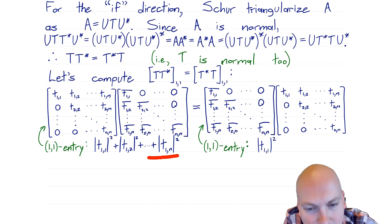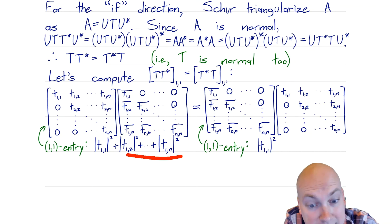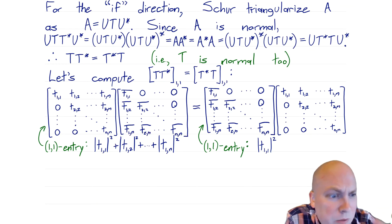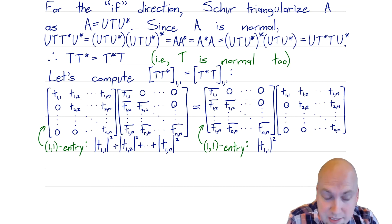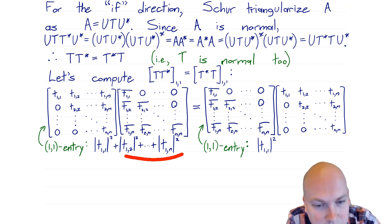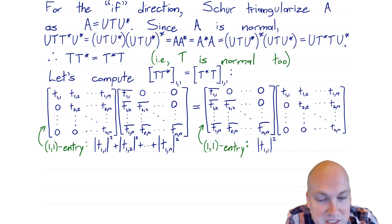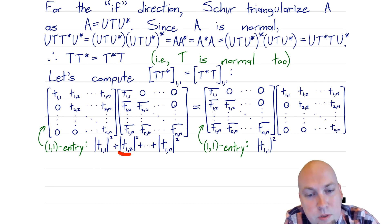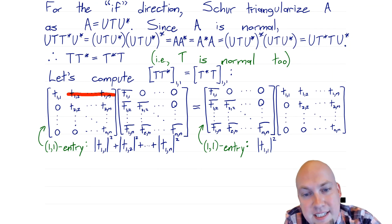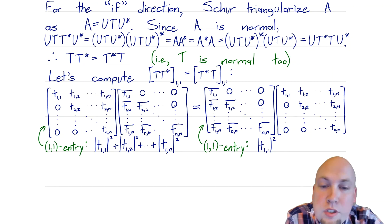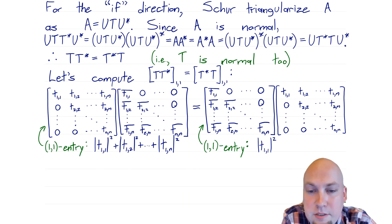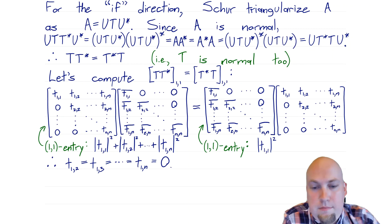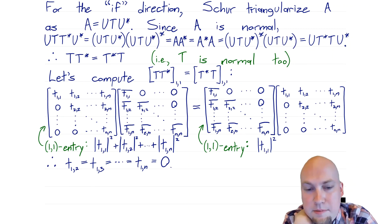So we know these two entries must equal each other because T is normal. We have |t₁₁|² + |t₁₂|² + ... + |t₁ₙ|² on the left equal to just |t₁₁|² on the right. The only way that's possible is if all the additional terms are zero — they're all real numbers greater than or equal to zero, so they must all equal zero. This tells us that t₁₂, t₁₃, all the way up to t₁ₙ must all equal zero — so the only non-zero entry in the first row of T is the diagonal entry t₁₁.